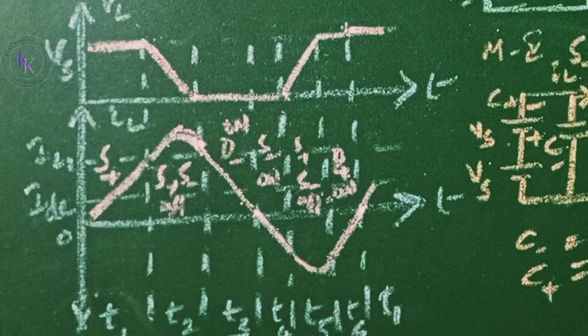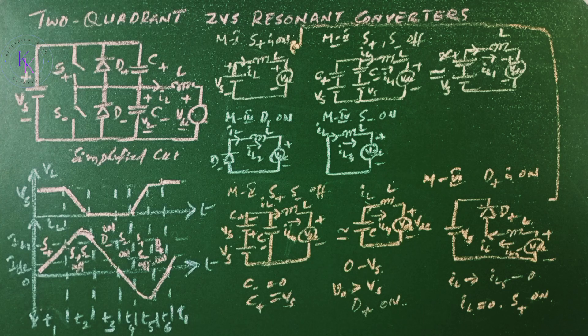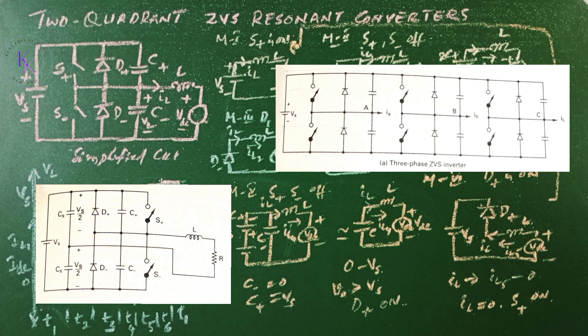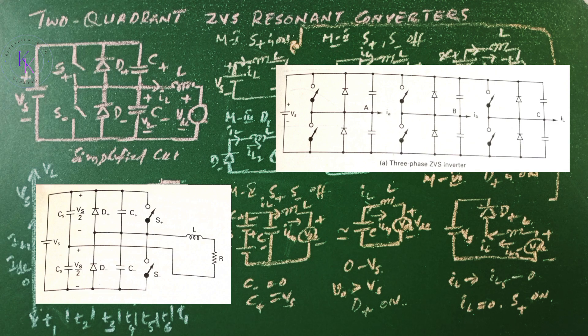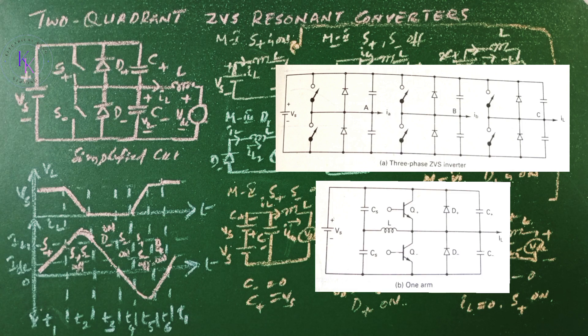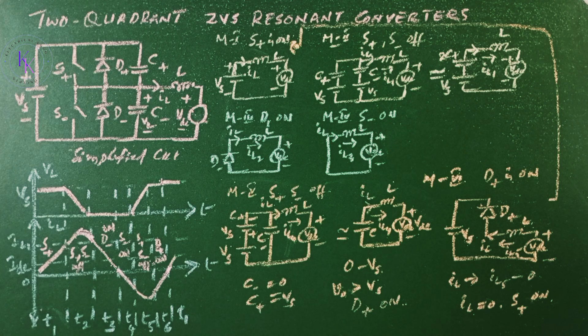Now you can replace the S term with the thyristor if the switch is a thyristor. The two-quadrant ZVS converter circuit can be extended to a single-phase half-bridge inverter as shown here and a three-phase version as shown here where the load inductance L constitutes the resonant circuit. One form of the three-phase circuit in which a separate resonant inductor is used is as shown in this figure. This is regarding two-quadrant zero voltage switching resonant converter. If this video is useful please like share and subscribe.